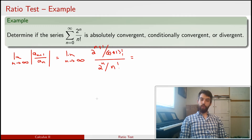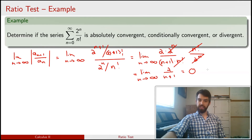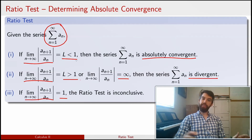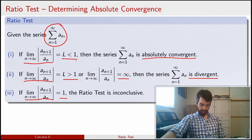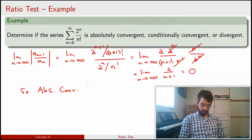Simplifying that expression, everything is already positive so absolute values aren't a concern. The result simplifies to give a limit of 0, which is less than 1. Therefore, by the ratio test, the series is absolutely convergent.